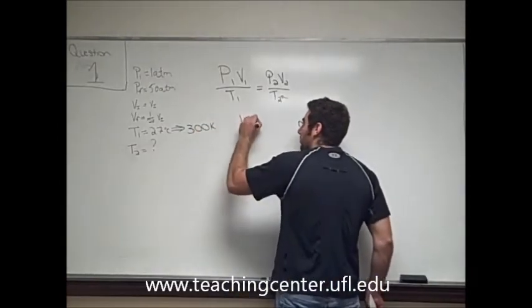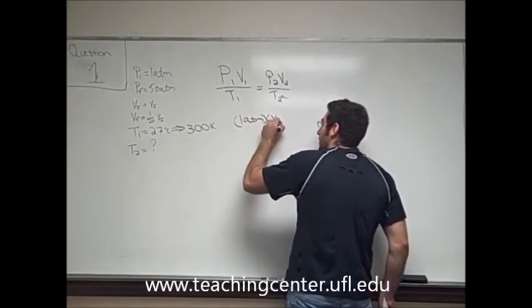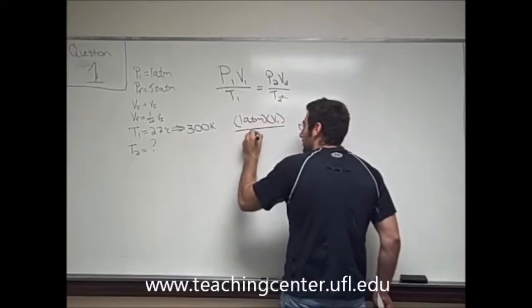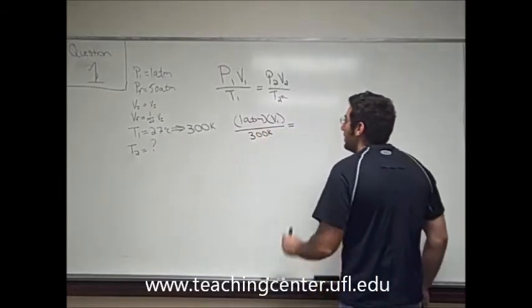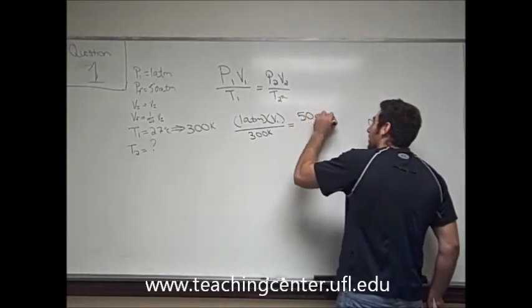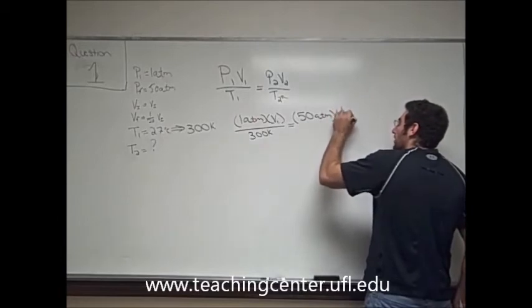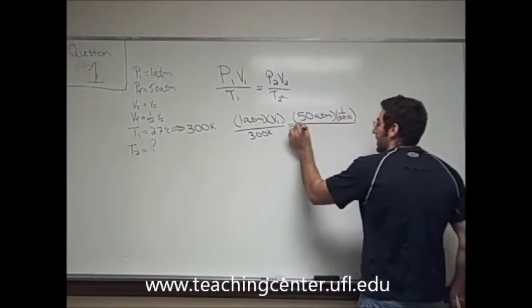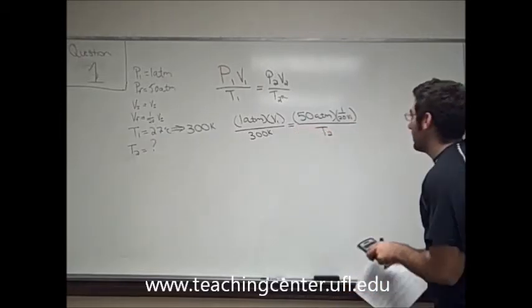So pressure 1 is equal to 1 atmosphere with an initial volume of V1 over 300 Kelvin. Pressure 2 goes up to 50 atm. And V2 is equal to 1/20th VI, or V1. And now we can solve for our final temperature.